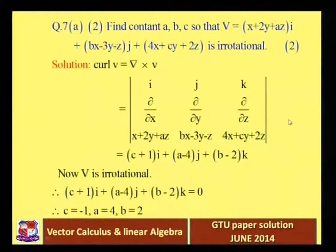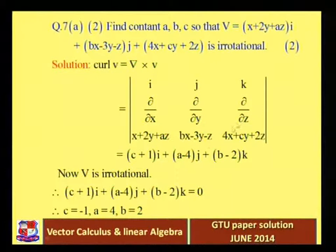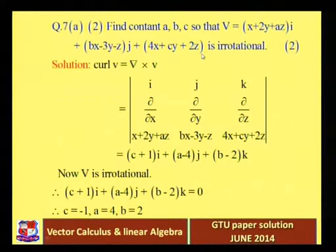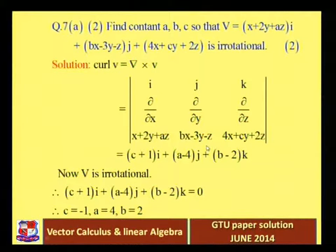Curl of v equals this determinant: the first row is i, j, k; the second row is del/del x, del/del y, del/del z; and the third row is the coefficients of i, j, and k — that is: x + 2y + az, then bx - 3y - z, and 4x + cy + 2z.